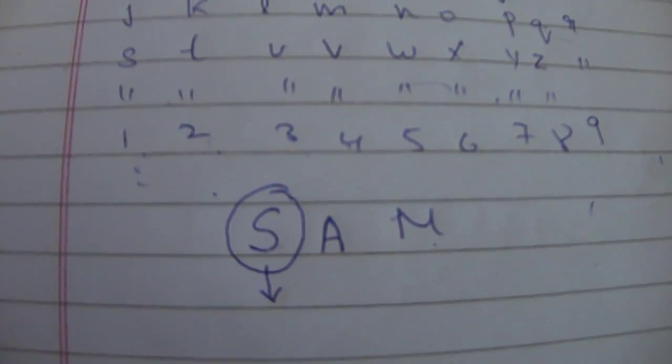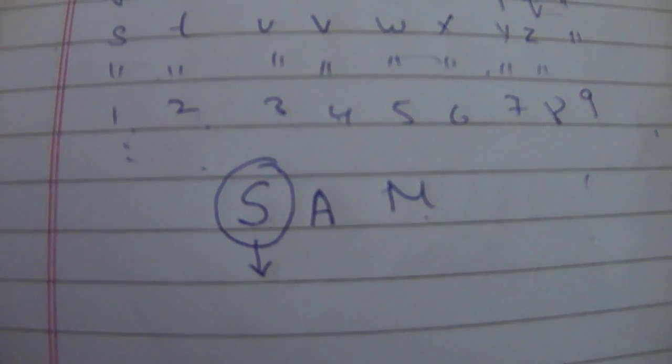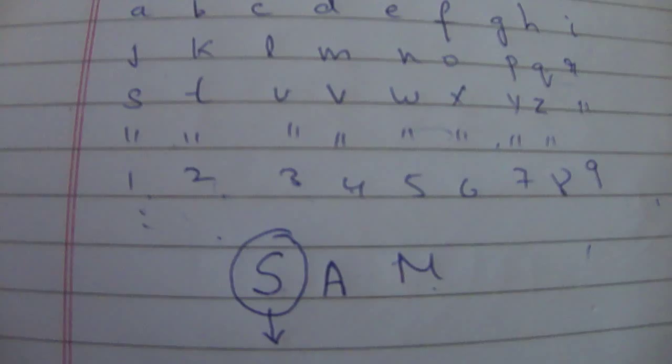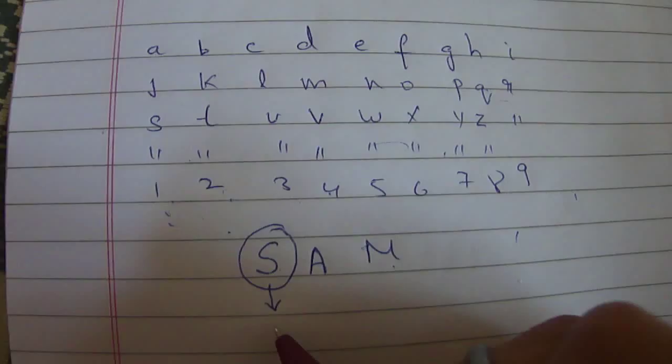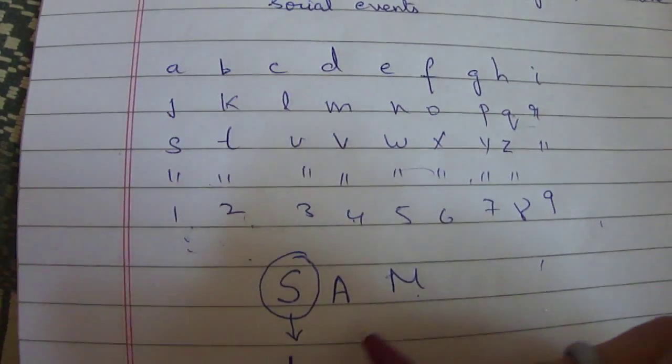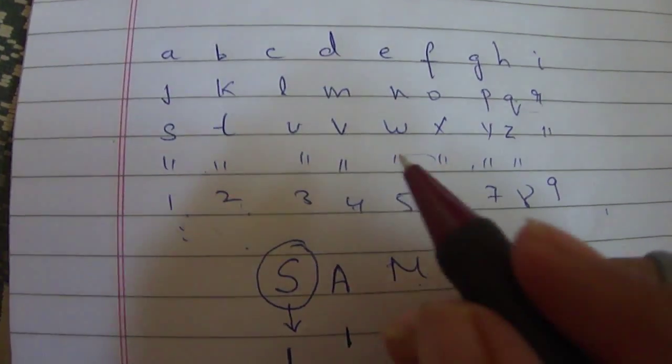Now let us understand how the name Sam's character will be. For example, S has the value 1. Then A has the value 1 and then M has the value 4.